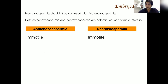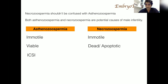The reason we must differentiate is that they both look immotile. But in asthenozoospermia there are more viable sperm, while in necrozoospermia the sperm are dead and apoptotic. In asthenozoospermia you can simply use a chemical to activate the sperm and perform ICSI to achieve pregnancy. But in necrozoospermia the issue is different — there is a membrane disorder and you may have high DNA fragmentation.